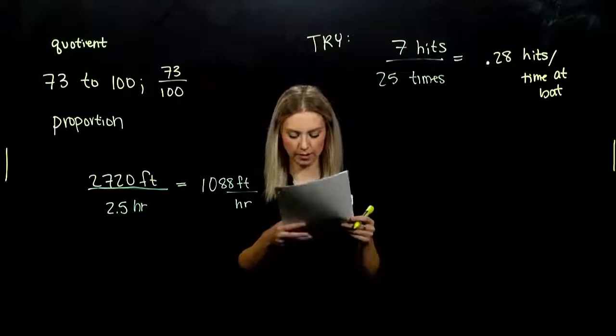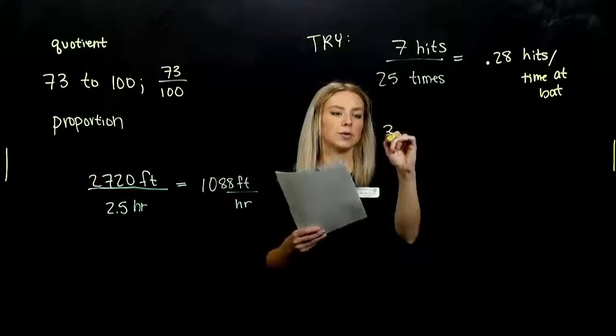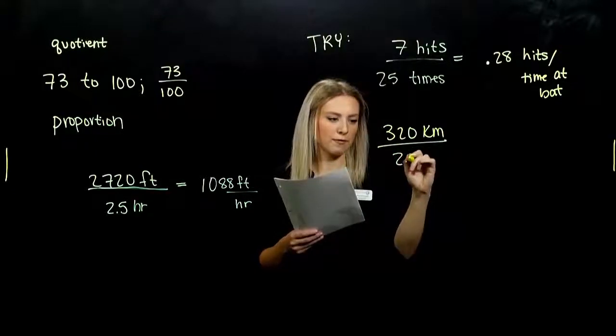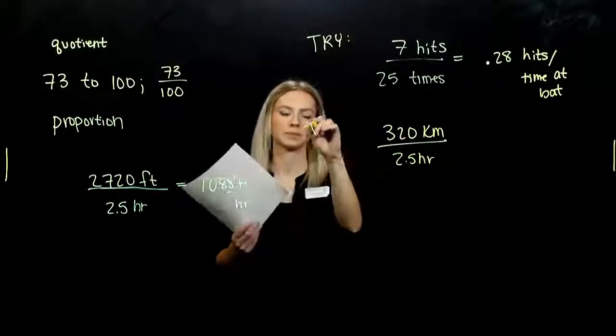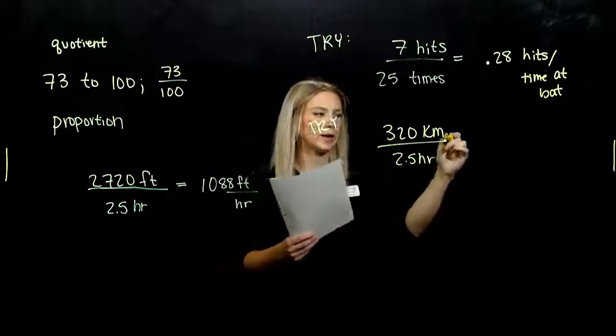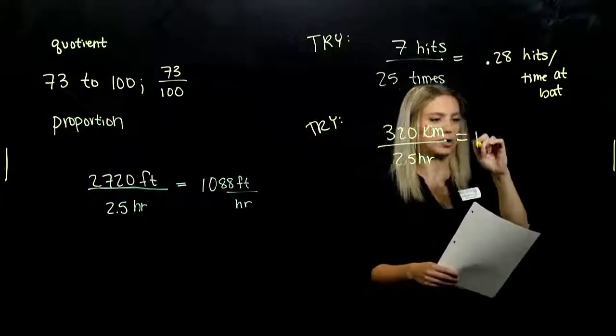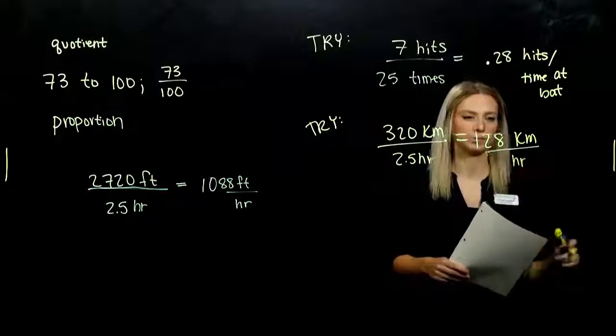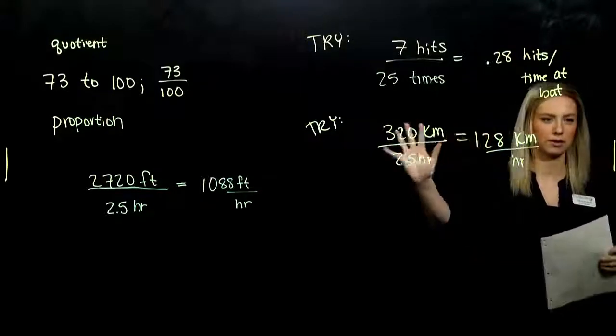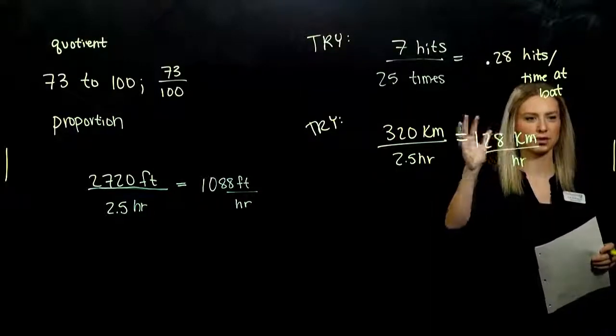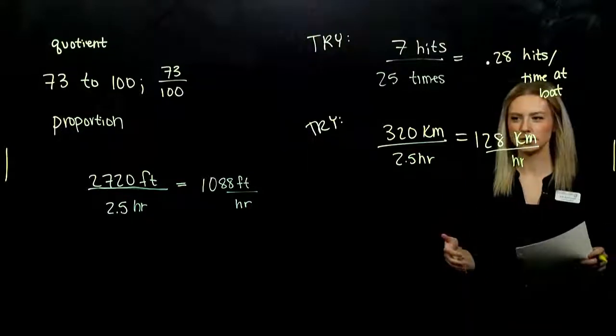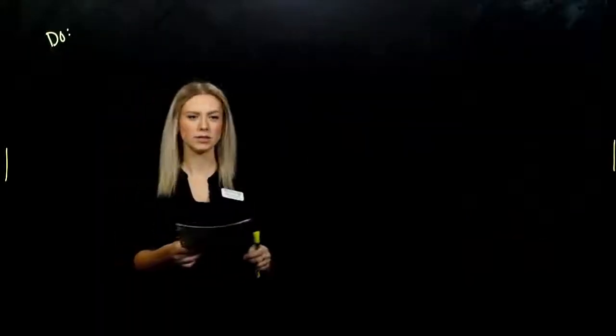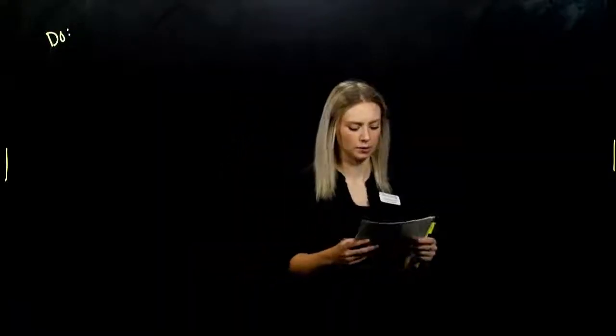And the second one: impulses in the nerve fibers travel 320 kilometers per 2.5 hours. If we're reporting that per hour instead, we're talking about 128 kilometers per hour. So again, proportionate. We still have the same rate, still traveling at the same speeds, but just based on our unit time that's involved. Let's look at a few application problems with proportions.